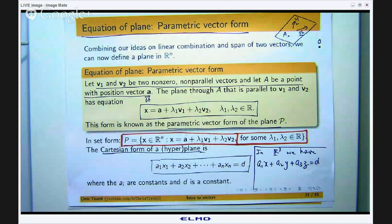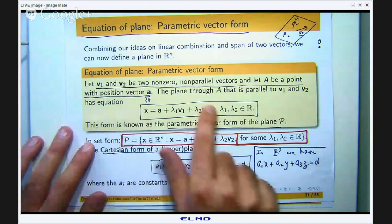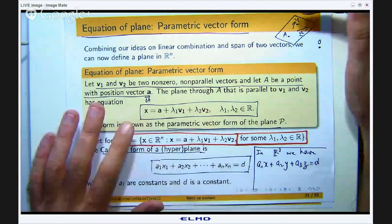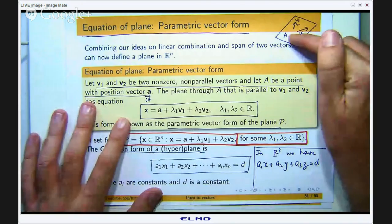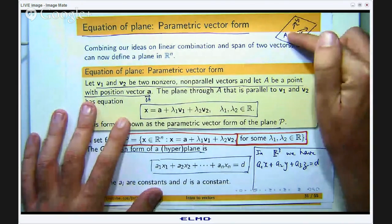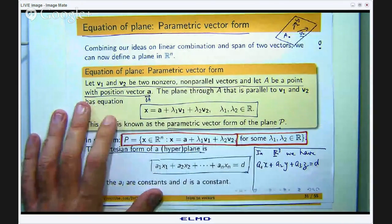So to get to any point on this plane all I have to do is basically get to a and then use v1 and v2 or scalar multiples of them and adding them together to get around the whole plane. So that is pretty much why this is the form.